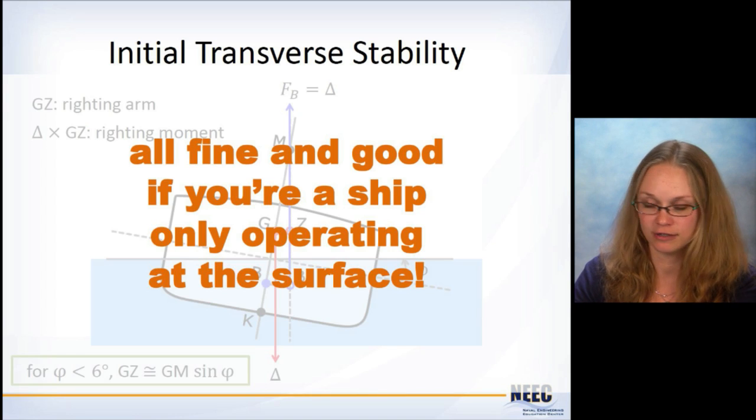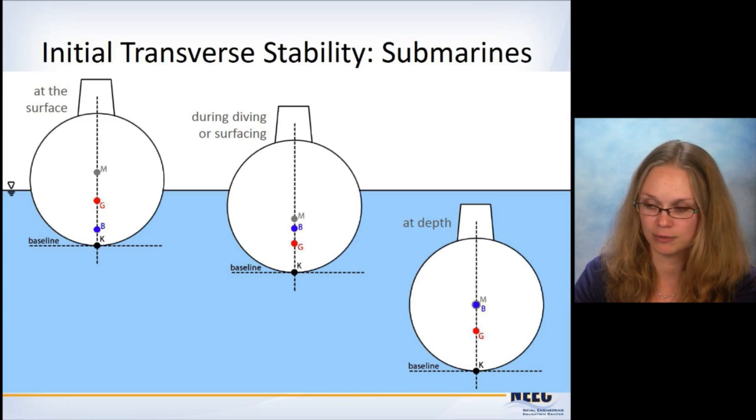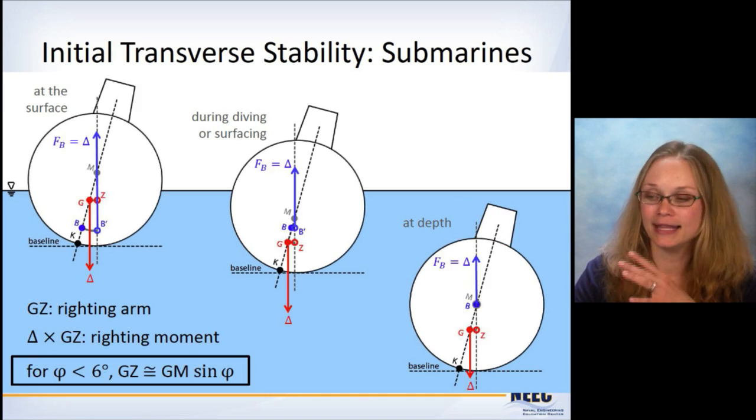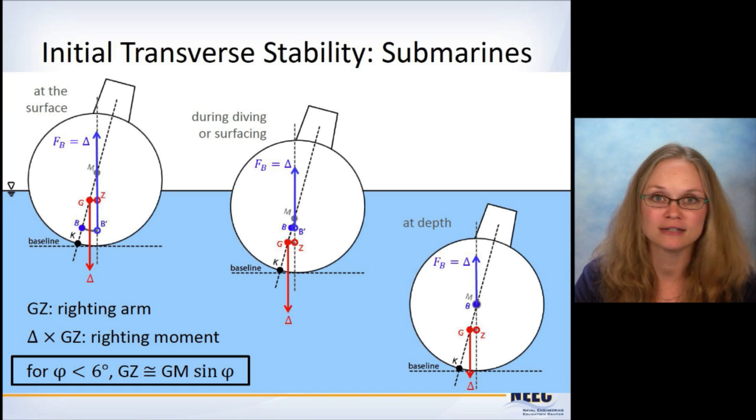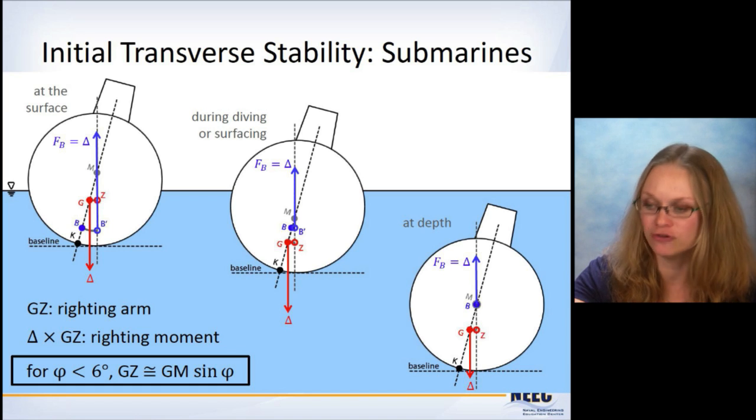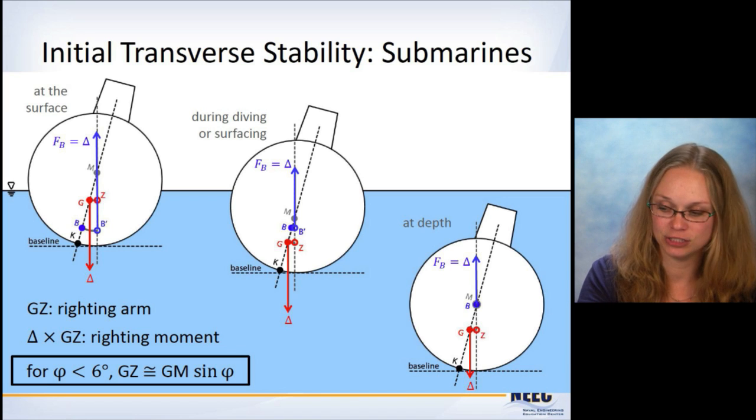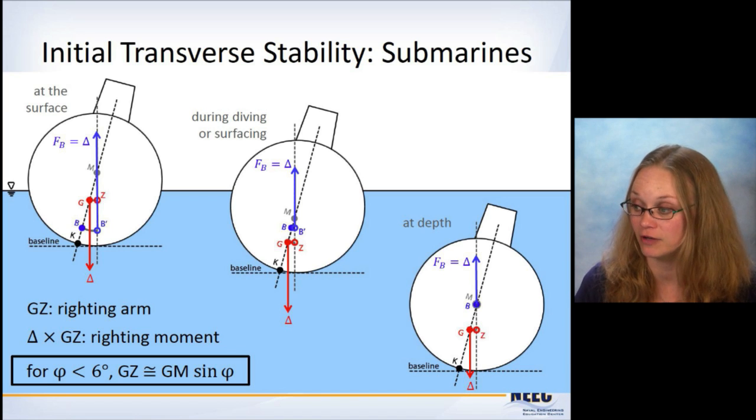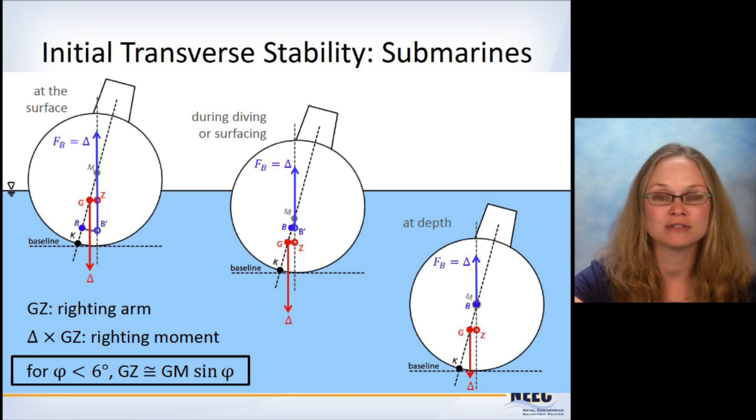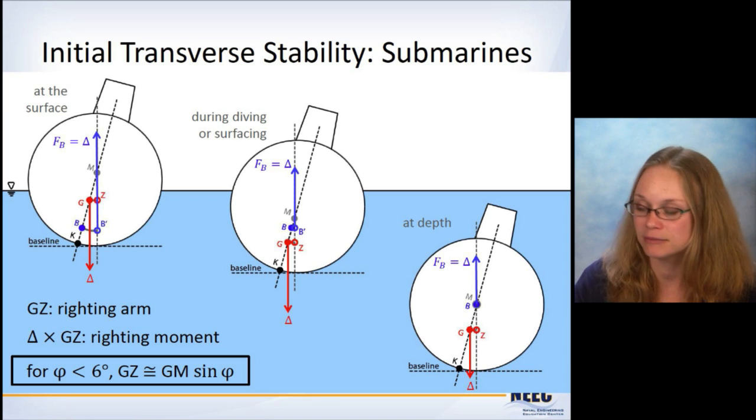Because it's all fine and good if you're operating the surface, but if you're a submarine, you got to do it this way. At the surface during diving or surfacing or at the depth. And the procedure is the same. You tilt the submarine over and you draw the arrows and you calculate GZ by estimating GZ using GM times the sine of phi.